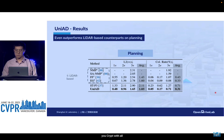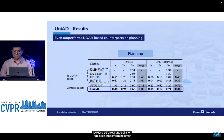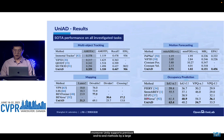When it comes to planning, UniAD achieves the lowest L2 error and collision rate, even outperforming data-driven methods, thanks to our carefully designed queries and planning-oriented philosophy. Moreover, UniAD surpasses previous end-to-end methods by a large margin on all tasks we examined.